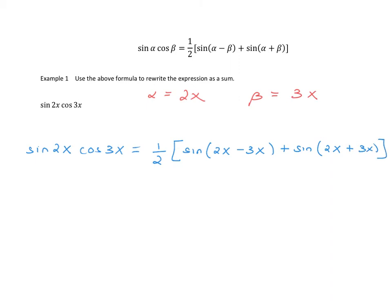The only thing left to simplify is combine the like terms. So sine of 2x times cosine of 3x is equal to one half of sine of 2x minus 3x, which is really negative x, and then sine of 2x plus 3x is 5x. And here we've taken a product of a sine and a cosine and re-expressed it as the sum of two trig functions.